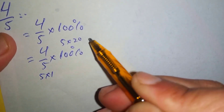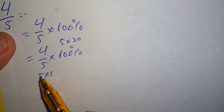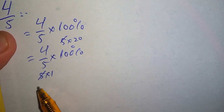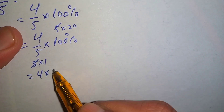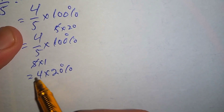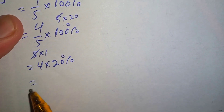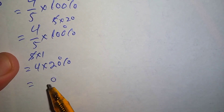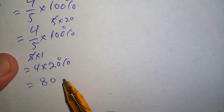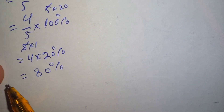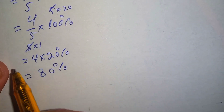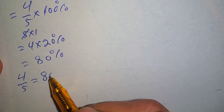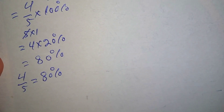5 times 20 is 100, so we will cancel out this 5 with this 5 and write the remaining terms. So 4 times 20 percent. We will multiply 4 by 20: 4 times 0 is 0 and 4 times 2 is 8, so the answer is 80 percent.